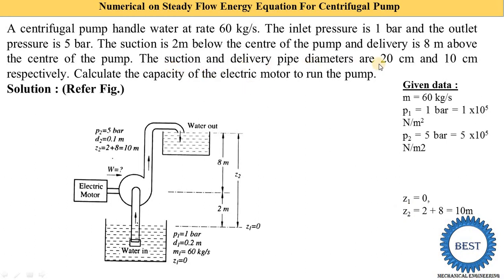The suction pipe diameter is 20 cm and the delivery pipe diameter is 10 cm. Converting to meters: d1 = 20/100 = 0.2 m. If diameter were given in mm, we would divide by 1000 instead.